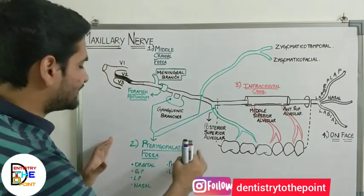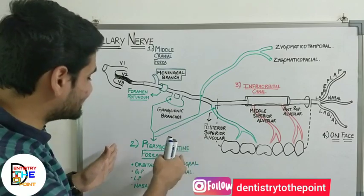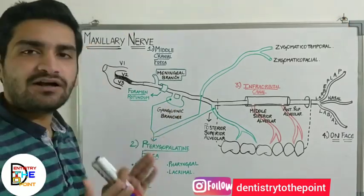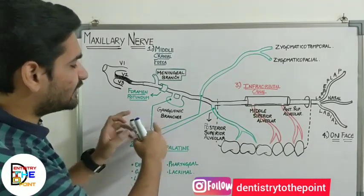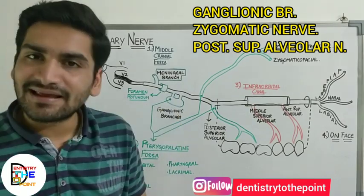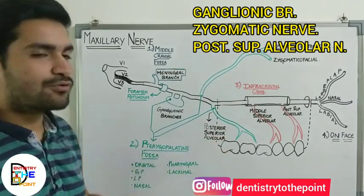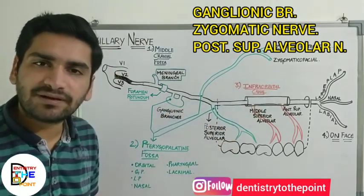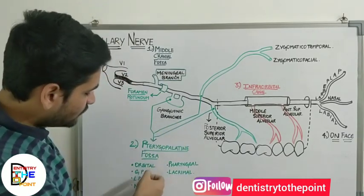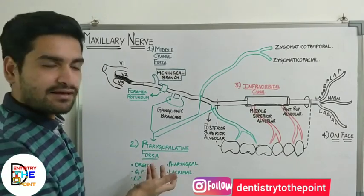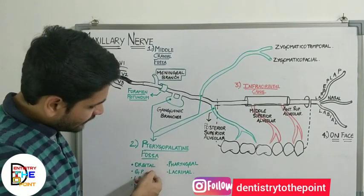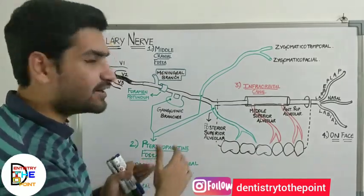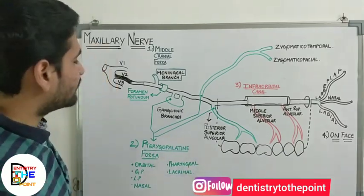In the pterygopalatine fossa, the maxillary nerve gives three branches. The first is the ganglionic branches — branches to the pterygopalatine ganglion. The branches of the pterygopalatine ganglion include orbital, greater palatine, lesser palatine, nasal, pharyngeal, and nasopalatine. We will discuss the pterygopalatine ganglion separately, but these are its branches.